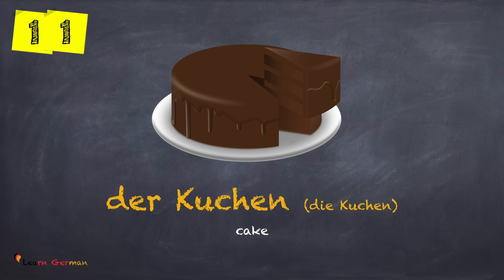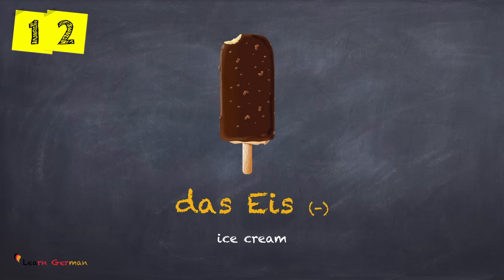der Kuchen, die Kuchen — once again, der Kuchen, die Kuchen. das Eis — once again, das Eis. Do remember that there is no plural for Eis.